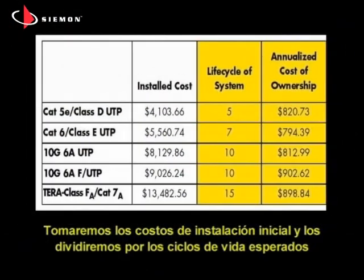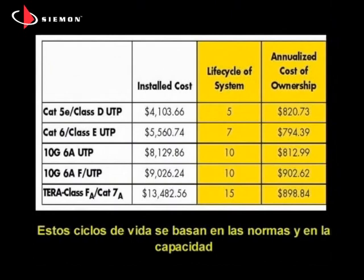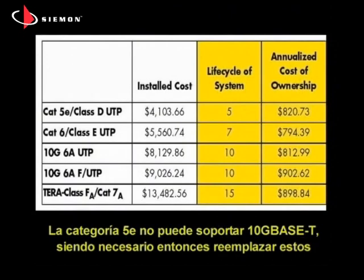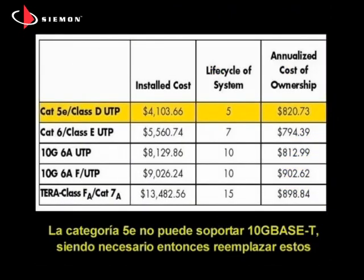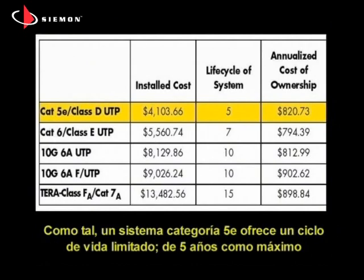Here we take the initial installation costs and divide them by the expected life cycles for each of the systems to get an annualized cost. These life cycles are based on industry standard guidelines and each cabling system's ability to support current and future applications. Category 5E cannot support 10G Base-T, making it necessary to replace these systems as 10 gigabit electronics become more readily available in the next 2 to 5 years. As such, a Category 5E system offers a limited 5 year maximum life cycle.